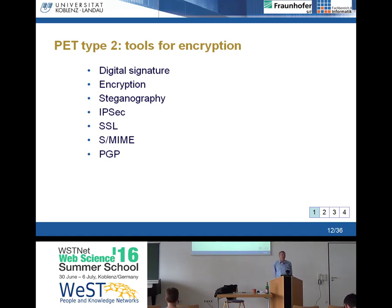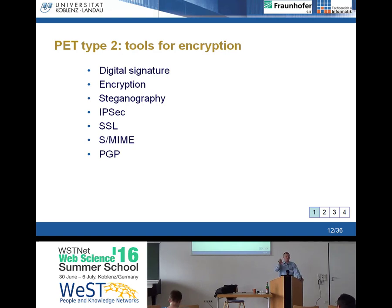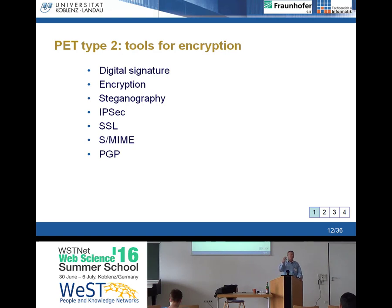Encryption is the type of privacy enhancing technology recommended so much as the king's road to privacy. You should use encryption whenever you can come into a delicate area of communication — make sure everything is encrypted. If you use Facebook, make sure that Facebook communication is encrypted. Use Telegram instead of WhatsApp because Telegram is encrypted — actually WhatsApp is encrypted now as well, so it's much better. Encryption is the type of PET which is very much in public awareness. Something like digital signatures, encryption itself, even hidden encryption.